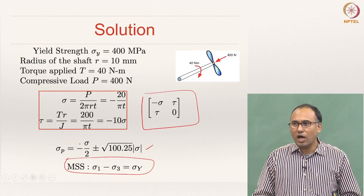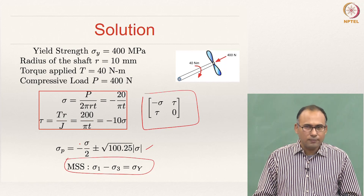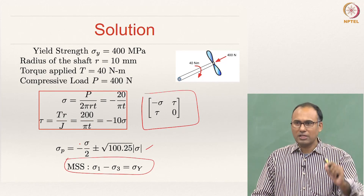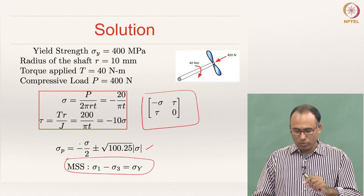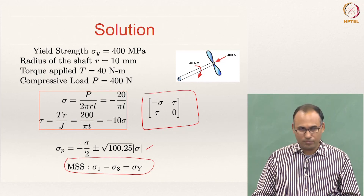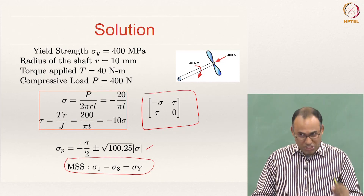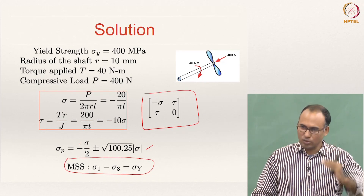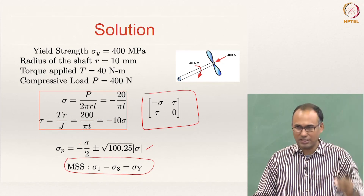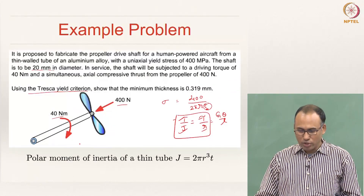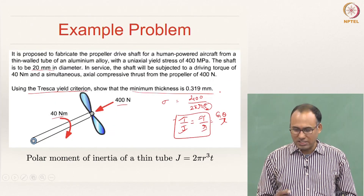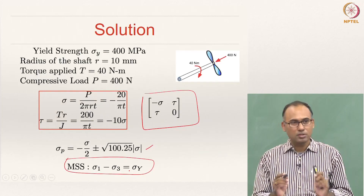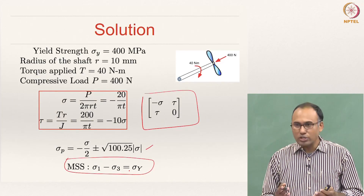Since you are not given any factor of safety, all you need to check is what is the limiting thickness — the minimum thickness the material requires to withstand the loading. You cannot have less than that; you can have any thickness greater than that. The calculation shows that a minimum thickness of 0.319 mm is required.